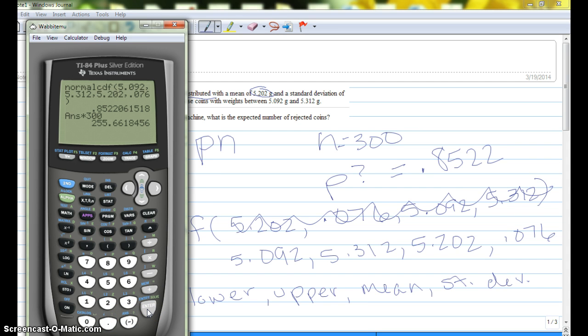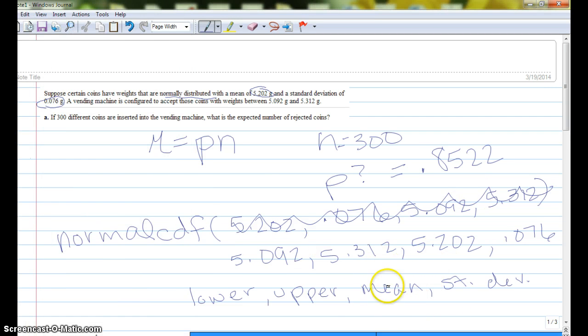And we see that the expected number of rejected coins, and we want to round to the nearest integer. So our rejected number of coins would be 256. So our answer for this first one would be 256.